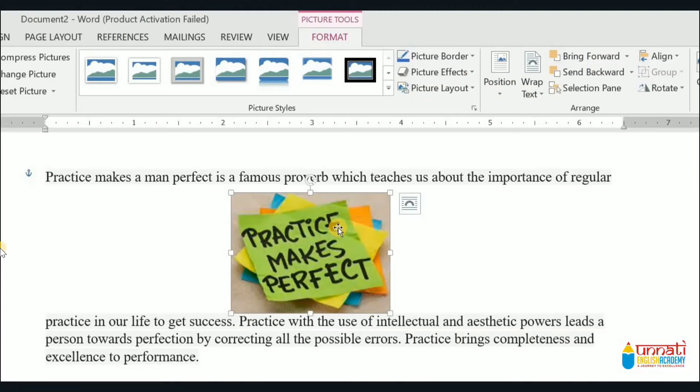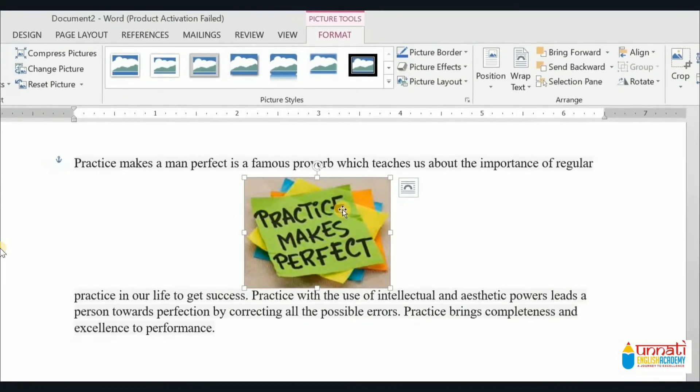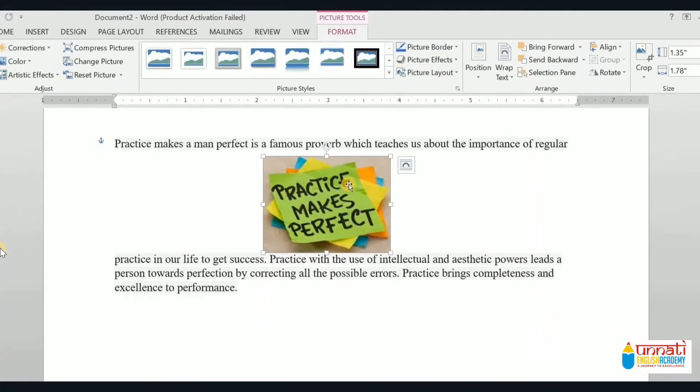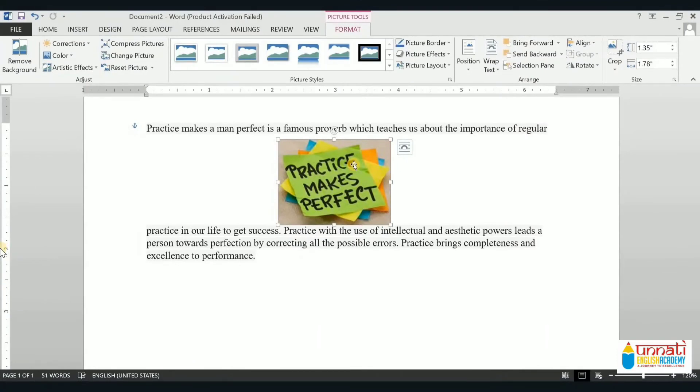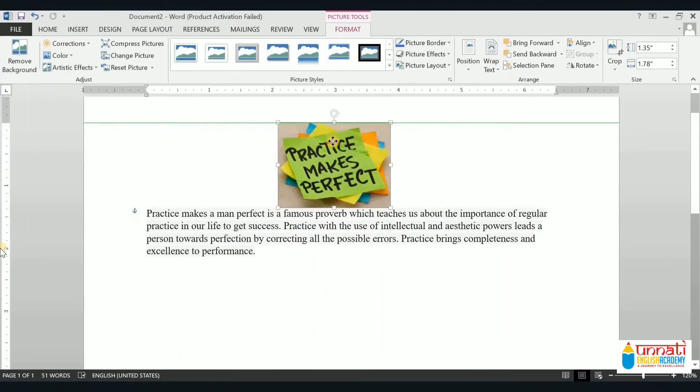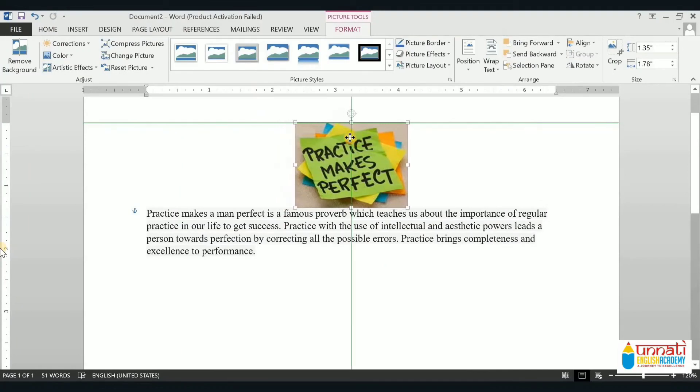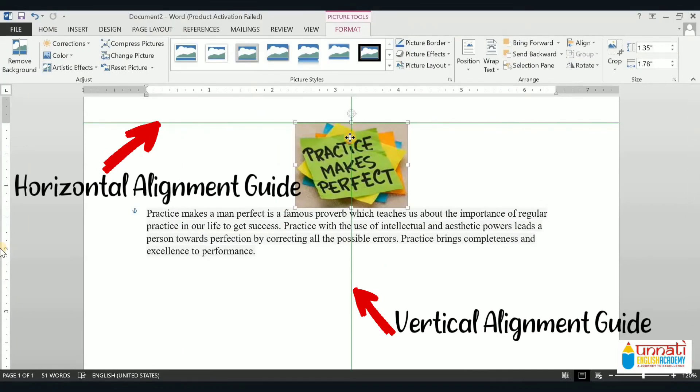Now we will see Alignment Guides. Alignment Guides will help you align the image to a piece of text or another picture. Alignment Guides are the green horizontal and vertical lines that appear when you move an image.